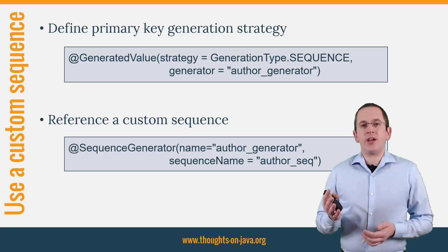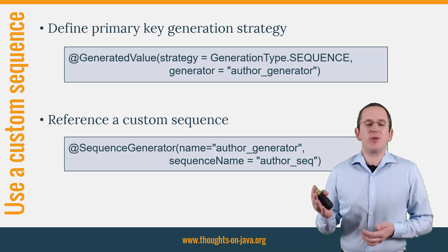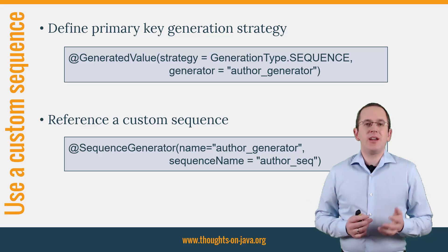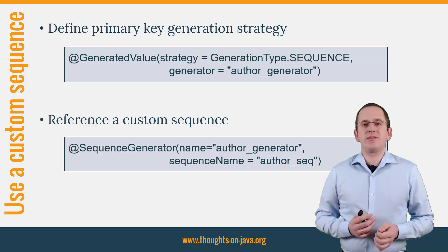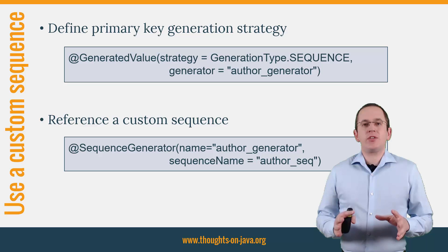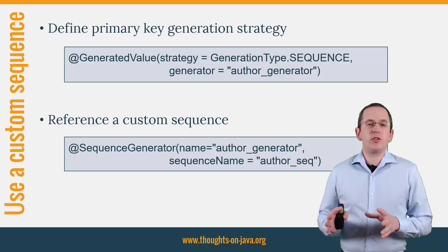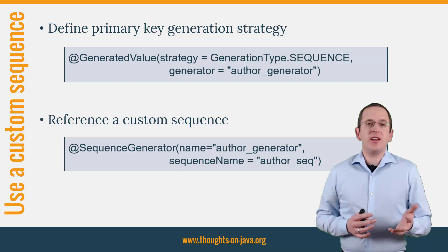In the next step, you need to define a sequence generator with the name you referenced in the @GeneratedValue annotation, as shown in the second code snippet. I just define the name of the generator and the name of the sequence. The sequence generator supports a few more attributes which you can use to define the database schema name, the allocation size, and other attributes of the sequence.